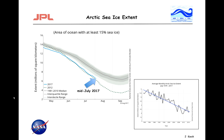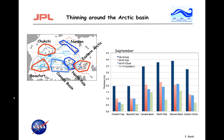Ice extent describes ice coverage, but there are a lot of other interesting things about the Arctic sea ice cover. One thing is ice thickness. This chart shows the thinning around the Arctic since 1958, ever since we started submarine cruises into the Arctic. This is a combination of observations from U.S. Navy submarines from 1958 to 1976 and 1993 to 1997. After that came the altimeters — the laser altimeters and the radar altimeters — which provided us with the freeboard of the Arctic Ocean, which we use to derive ice thickness.